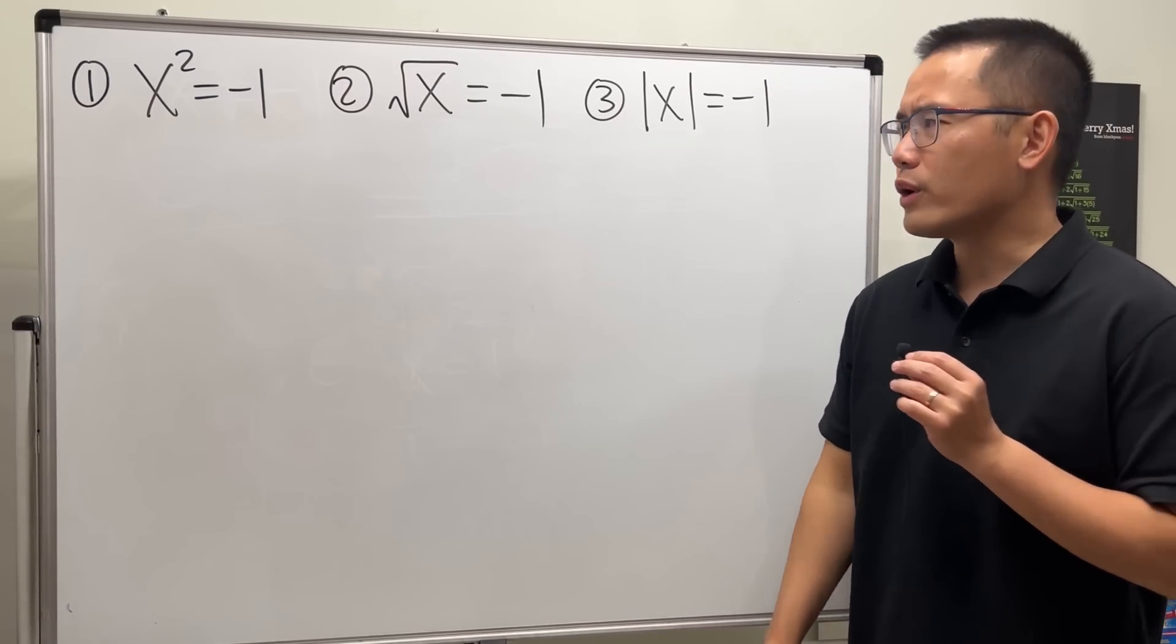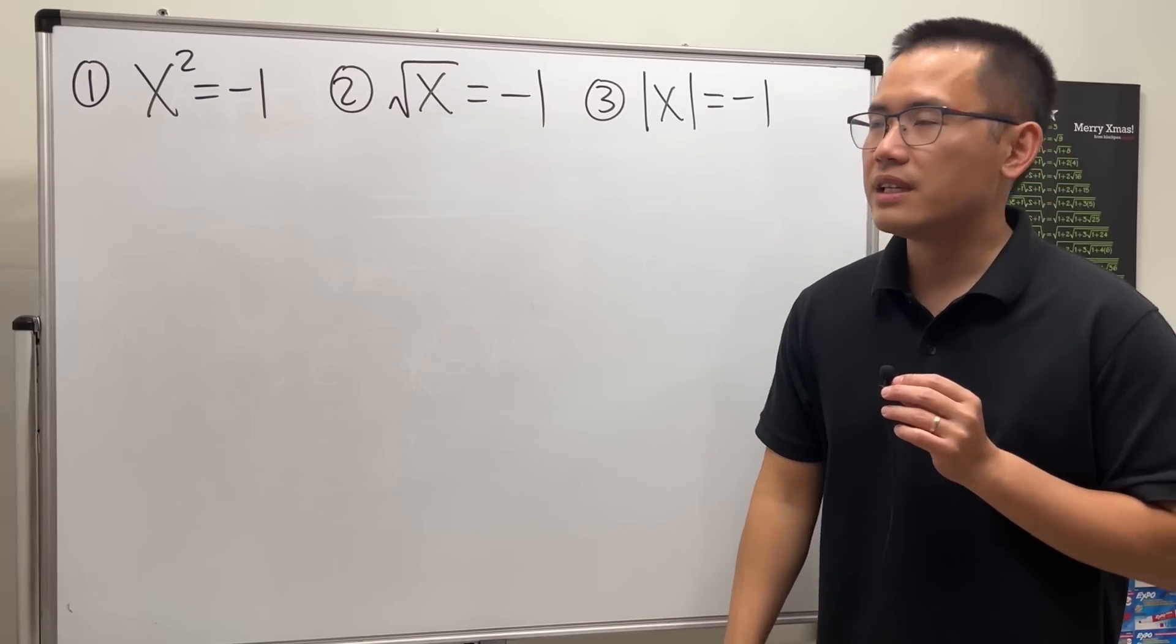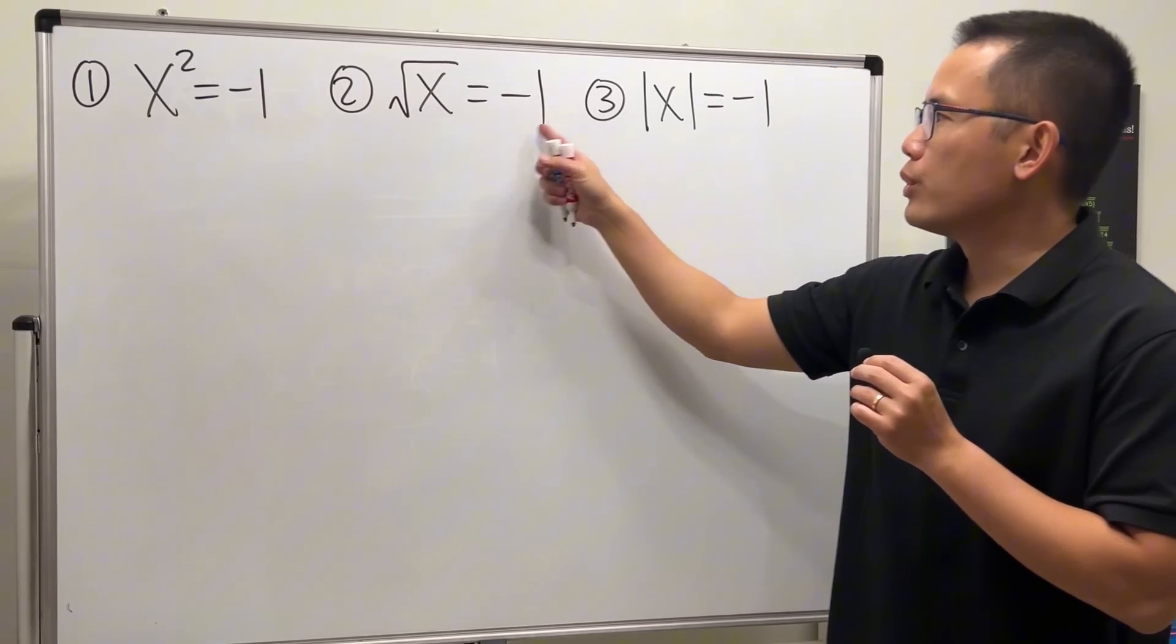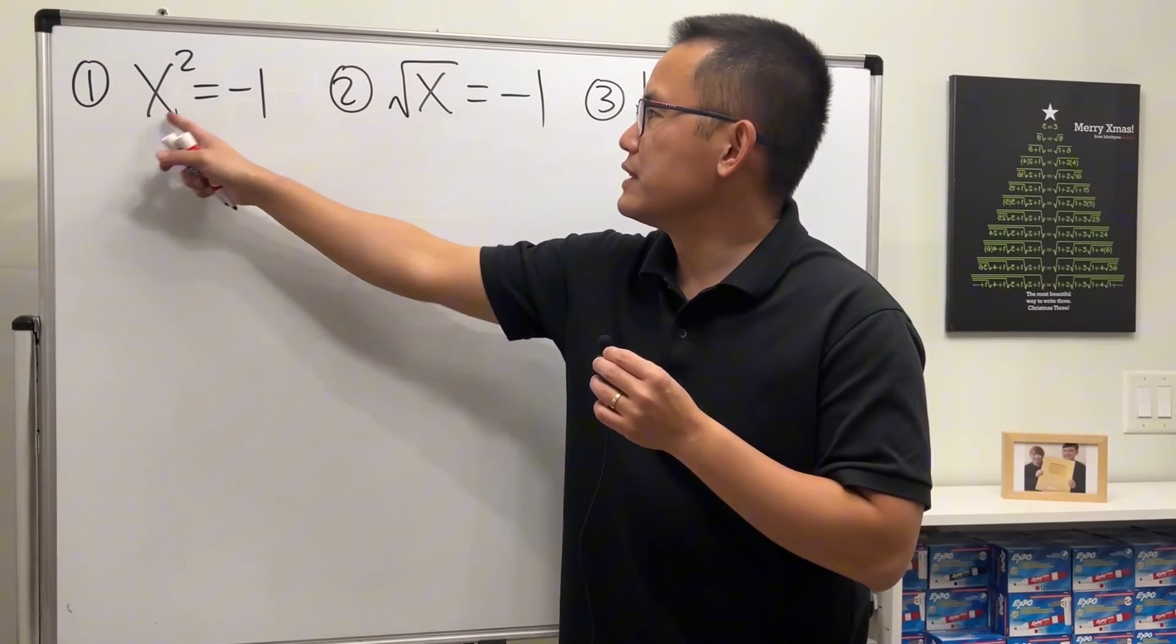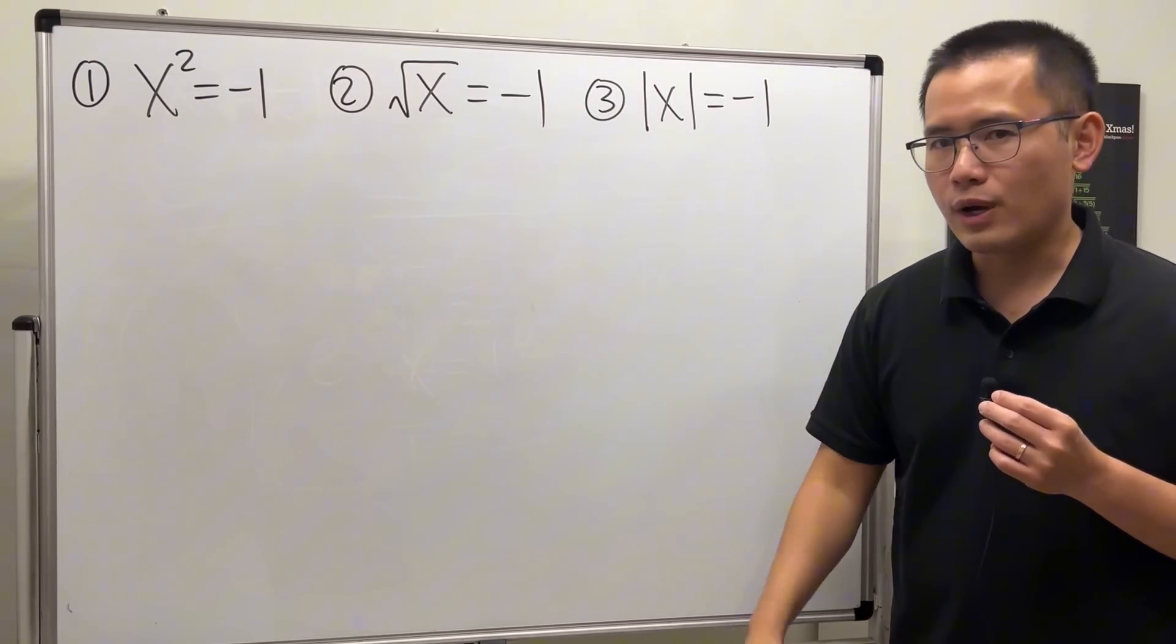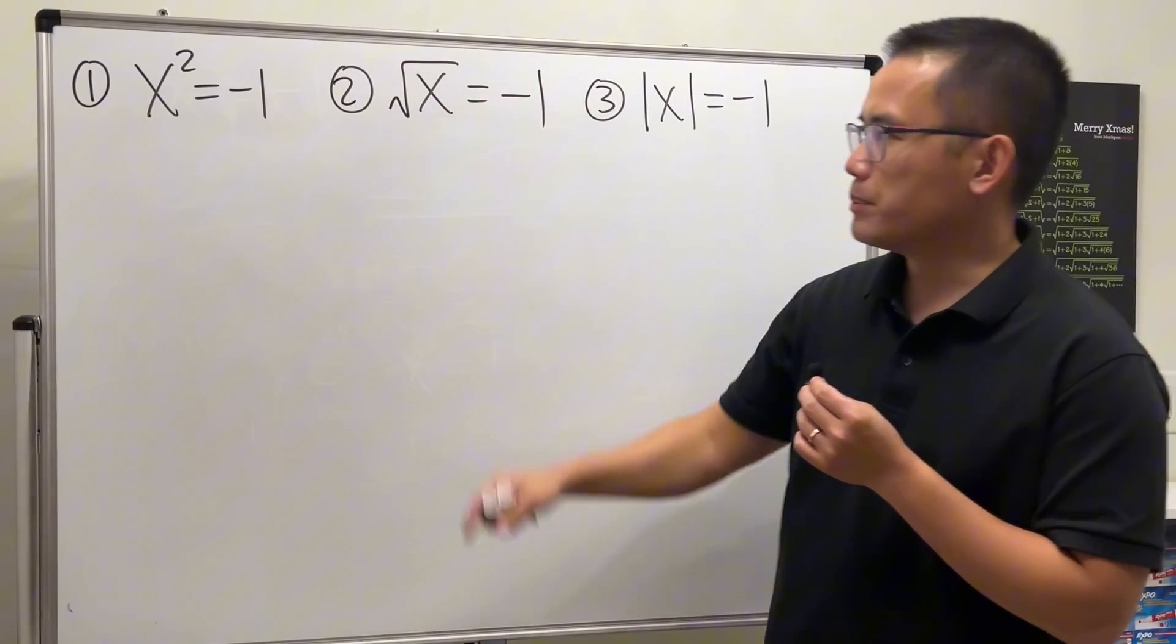There's something very interesting going on with these three equations. Notice that they are all equal to negative one, but let me tell you the graphs for these functions do not cross negative one at all.